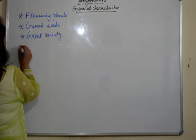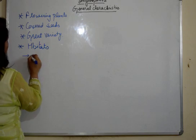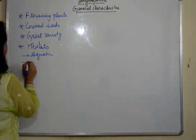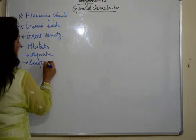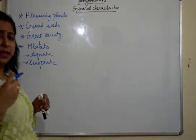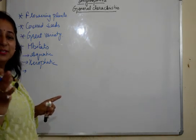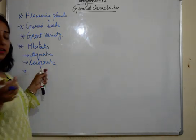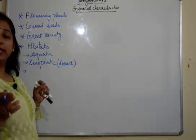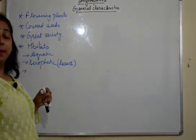They have different habitats. They can be aquatic. We all know lotus and all. They can be xerophytic. Cactus, kikar, all these are angiosperms. They can be xerophytic or desert plants. They can live in a desert. They can survive in a desert.